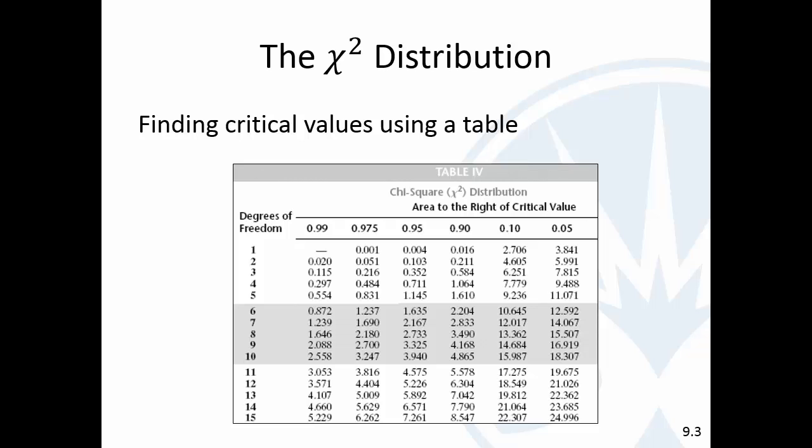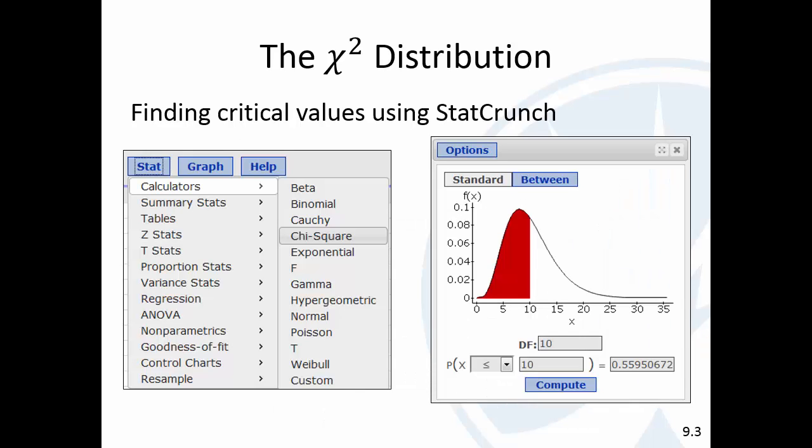Same idea as the t—it has the degrees of freedom and the area to the right. But we're going to use StatCrunch, so you can get there's a calculator—see the chi-square.